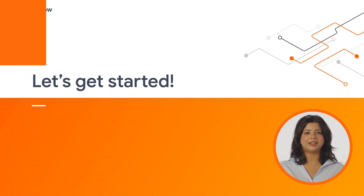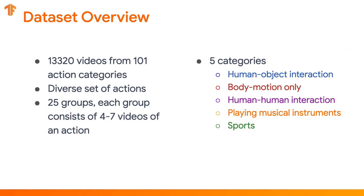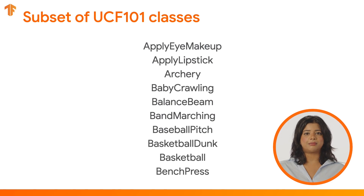Let's get started. Today we'll be using the UCF 101 action recognition dataset. This dataset contains 101 different actions from diverse categories. Each category has about 25 examples of that action, which are split into four to seven videos for each example. To keep things simple for this tutorial, we'll be using the first 10 classes listed here to keep the dataset size small, so our model can be trained quickly.